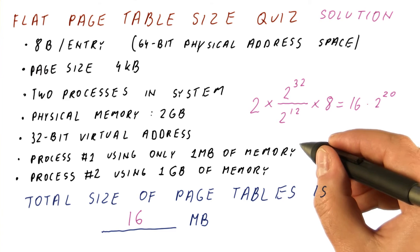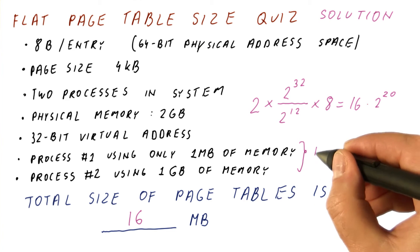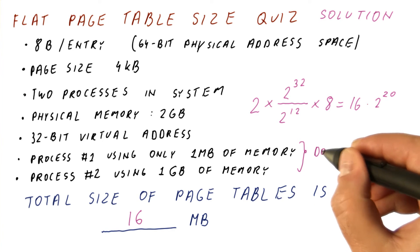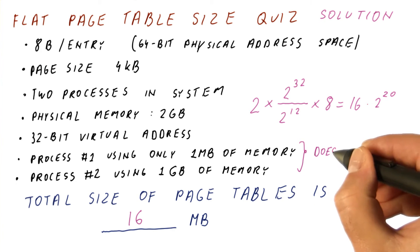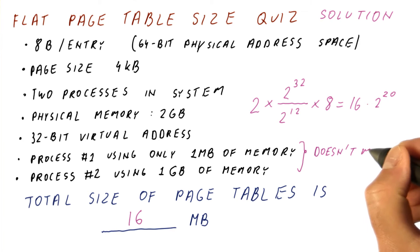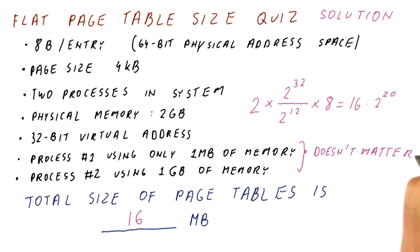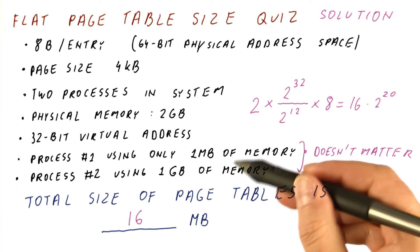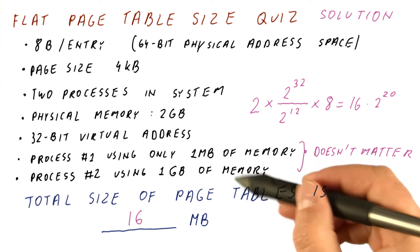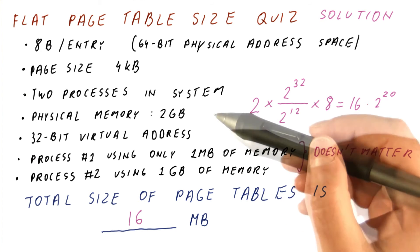Note that it didn't matter how much memory the processes are actually using. The flat page table needs to have an entry for every possible page in the virtual address space, not only for the pages we are actually using.